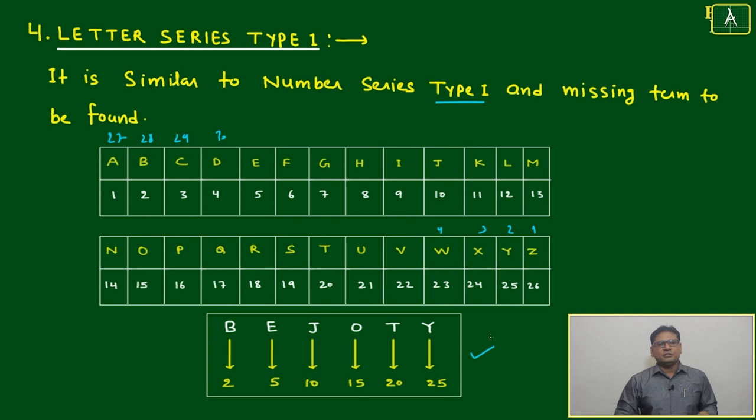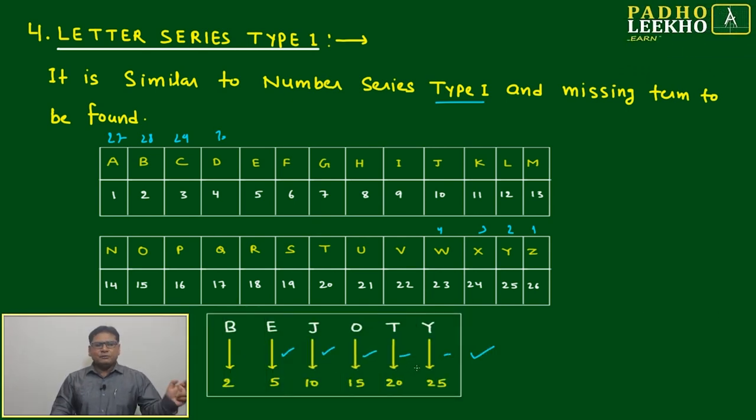And in shortcut, you can try to remember the position of all the alphabets with the numerical position as BEJO T. B is 2, E is 5, J is 10, O is 15, T is 20, 25. BEJO T - in between you will be able to fill the gap.